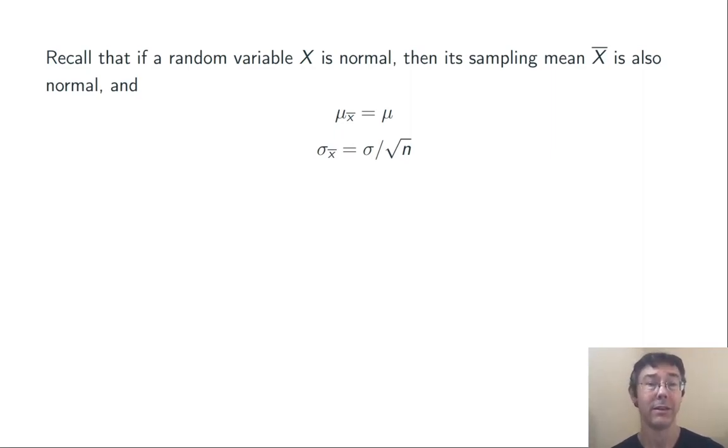However, there's going to be less spread. The standard deviation of that sampling mean is going to be the standard deviation of the population divided by the square root of n.